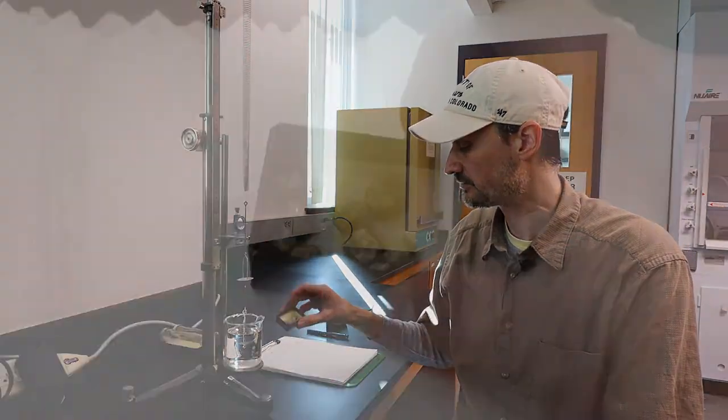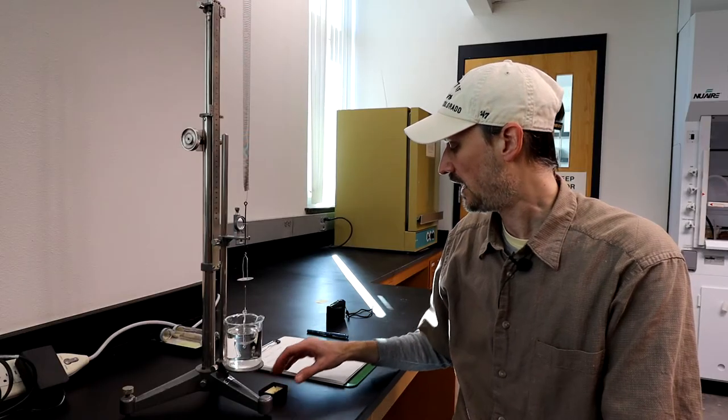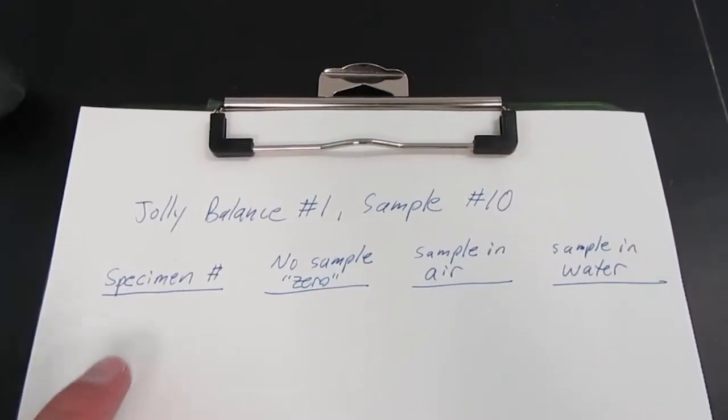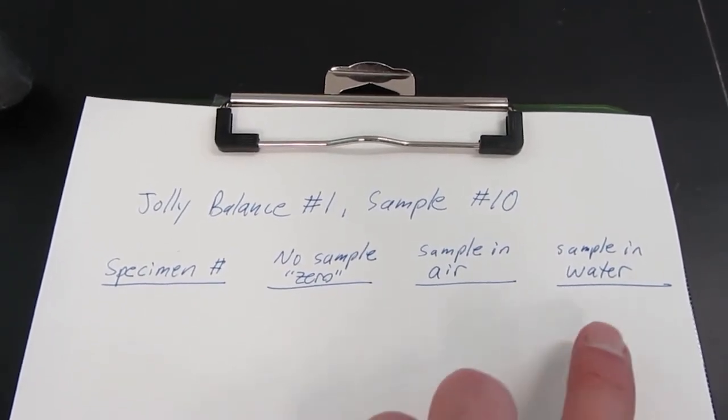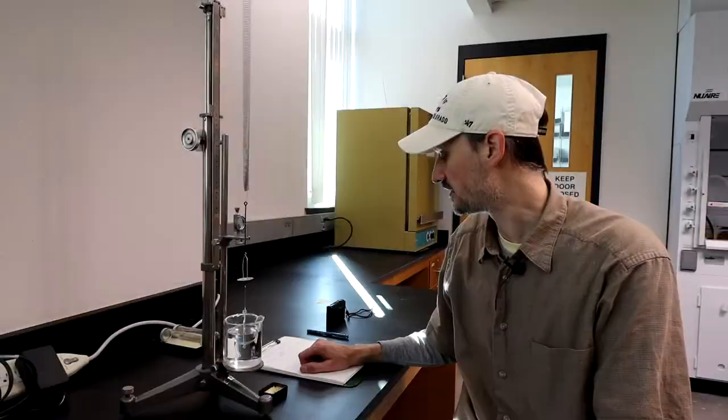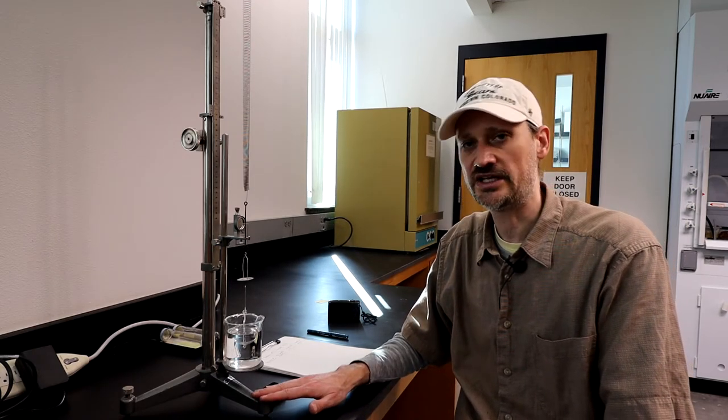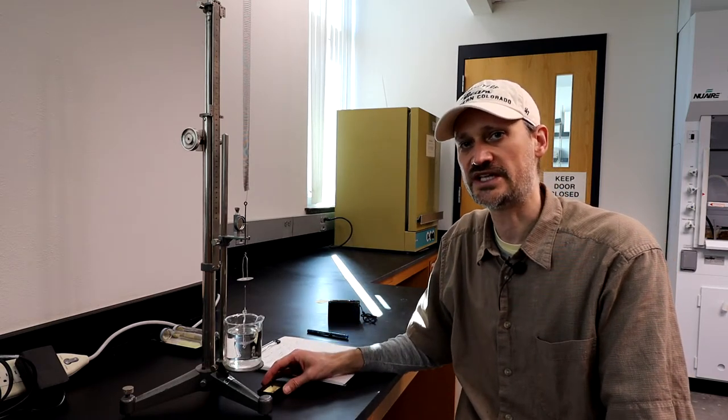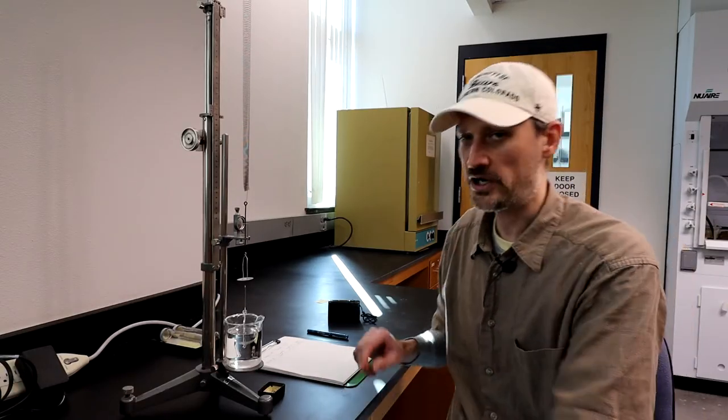I also have my specimen and a notebook. On that notebook I have specimen number, the zero measurement, the measurement for the sample in air, and the measurement for the sample in water. I also want you to keep track of which Jolly Balance you're using—in this case it's number one—and also keep track of which sample this is. In this case, this is sample number 10.